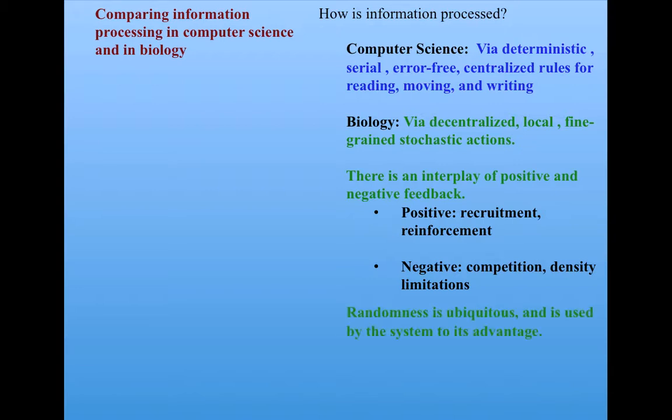We also see that randomness is ubiquitous, unlike in computer science, where randomness is stamped out. In nature, in biology, randomness is ubiquitous, and it's used by the system to its advantage. Finally, in biology, more and more people studying information processing find that the language of dynamical systems may be more useful than the language of computation.